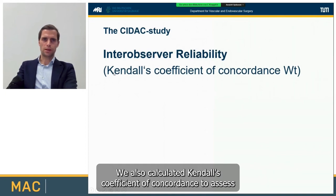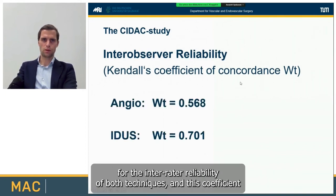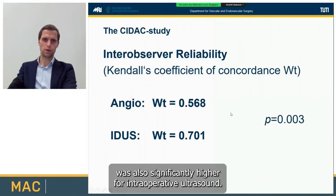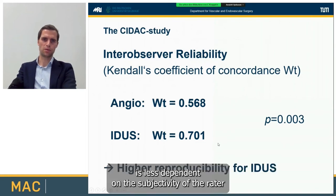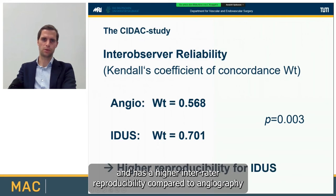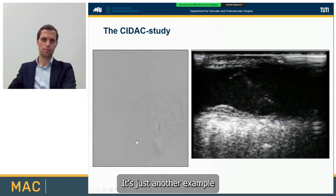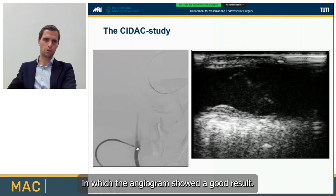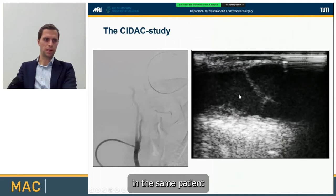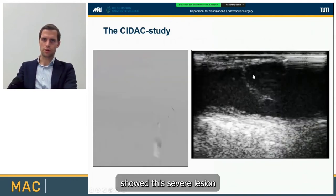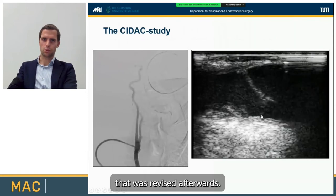We also calculated Kendall's coefficient of concordance to assess inter-rater reliability of both techniques. This coefficient was significantly higher for intraoperative ultrasound, meaning that intraoperative duplex ultrasound is less dependent on the subjectivity of the rater and has higher inter-rater reproducibility compared to angiography. In yet another example, the angiogram showed a good result — nothing to revise — but the corresponding ultrasound in the same patient showed a severe lesion that was revised afterwards.